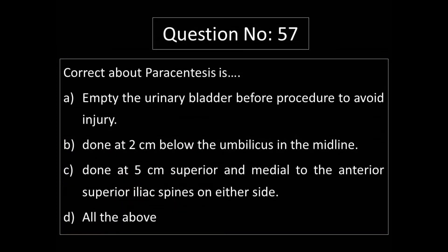Question number 57: What is correct about paracentesis? Option A: Empty the bladder before procedure to avoid injury. Option B: Done at 2 centimeters below the umbilicus in the midline. Option C: Done at 5 centimeters superior and medial to the anterior superior iliac spine on either side. Option D: All the above. Paracentesis is a diagnostic and therapeutic procedure where a needle and catheter are inserted into the peritoneal cavity to remove ascitic fluids.